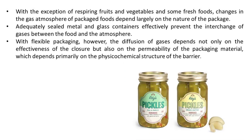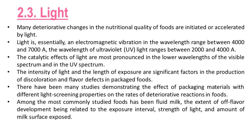With the exception of respiring fruits and vegetables and some fresh foods, changes in the gas atmosphere of packaged foods depend largely on the nature of the package. Adequately sealed metal and glass containers effectively prevent the interchange of gases between the food and the atmosphere. With flexible packaging, however, the diffusion of gases depends not only on the effectiveness of the closure but also on the permeability of the packaging material, which depends primarily on the physicochemical structure of the barrier. Many deteriorative changes in the nutritional quality of foods are initiated or accelerated by light.